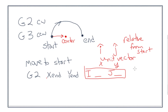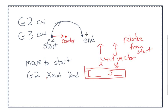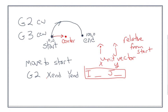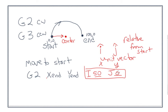Let's make it simple. Say the starting point is 0,0 and the ending point is 100,0. The center point is at 50,0 — it's 50 units in the X direction. So I is 50 and J is 0.